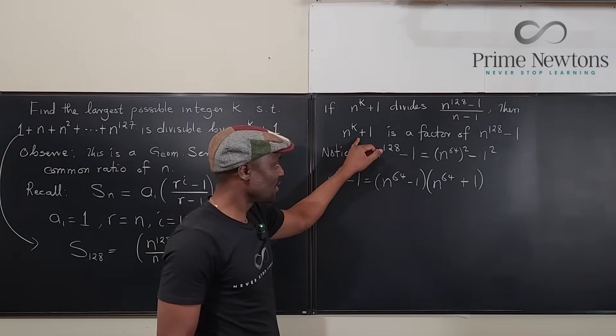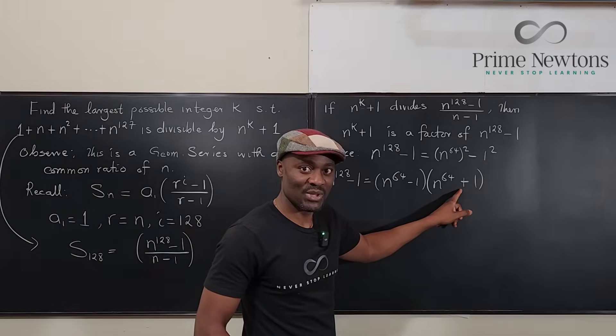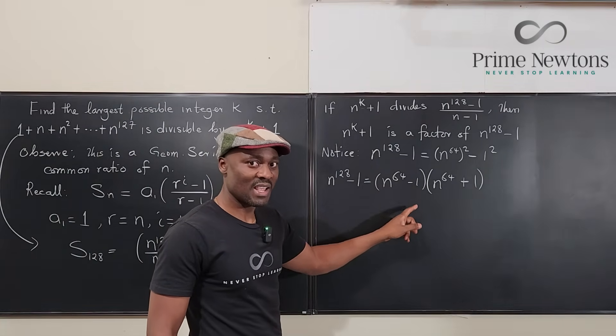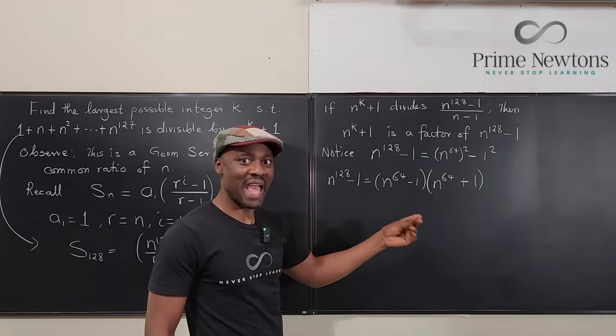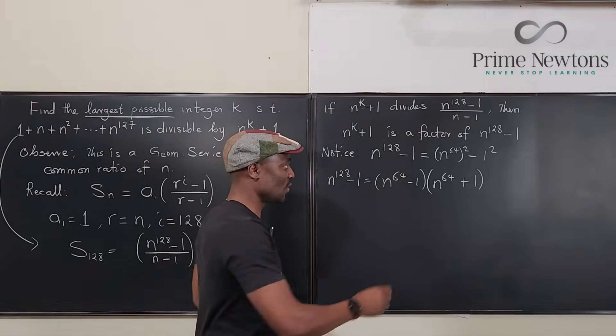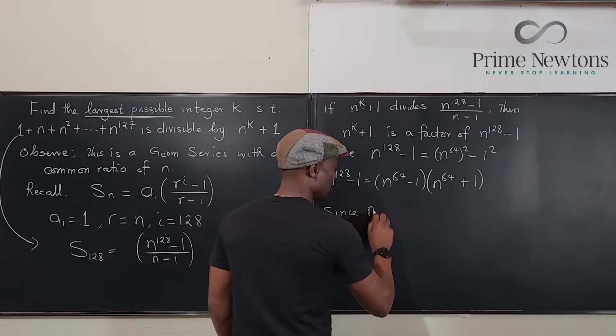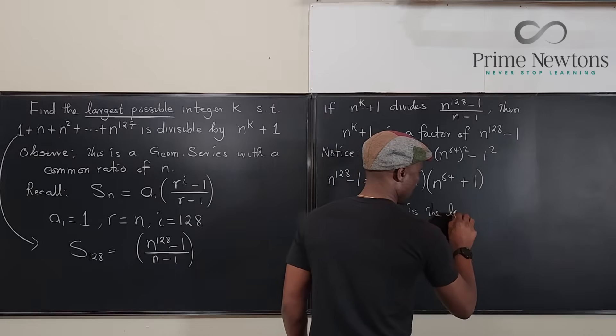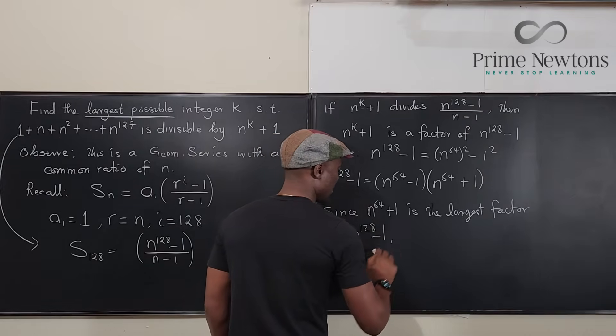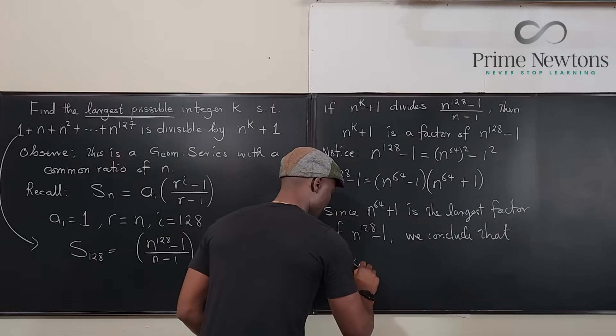And this looks very similar to this if k is equal to 64. If you want to go smaller, you can't touch this because you cannot break down the sum of two squares. You can still work on this one, but what happens is this becomes n to the 32 minus 1, n to the 32 plus 1. That's what you can break this into, but that's not the maximum. The question says find the largest possible. Any other thing you do to this is going to reduce the exponents. So this is the largest possible that you can get. Since n to the 64 plus 1 is the largest factor of n to the 128 minus 1, we conclude that k is equal to 64.